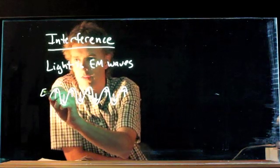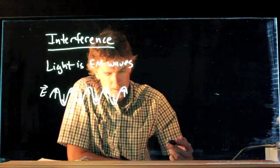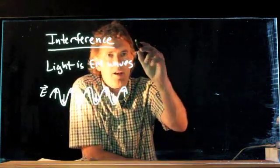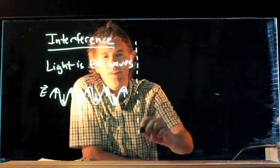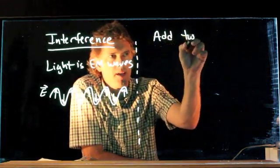So what we've drawn here, of course, is the E field pointing up or pointing down. But what happens now if we add two waves? So let's say we're going to take two waves and we add them together.